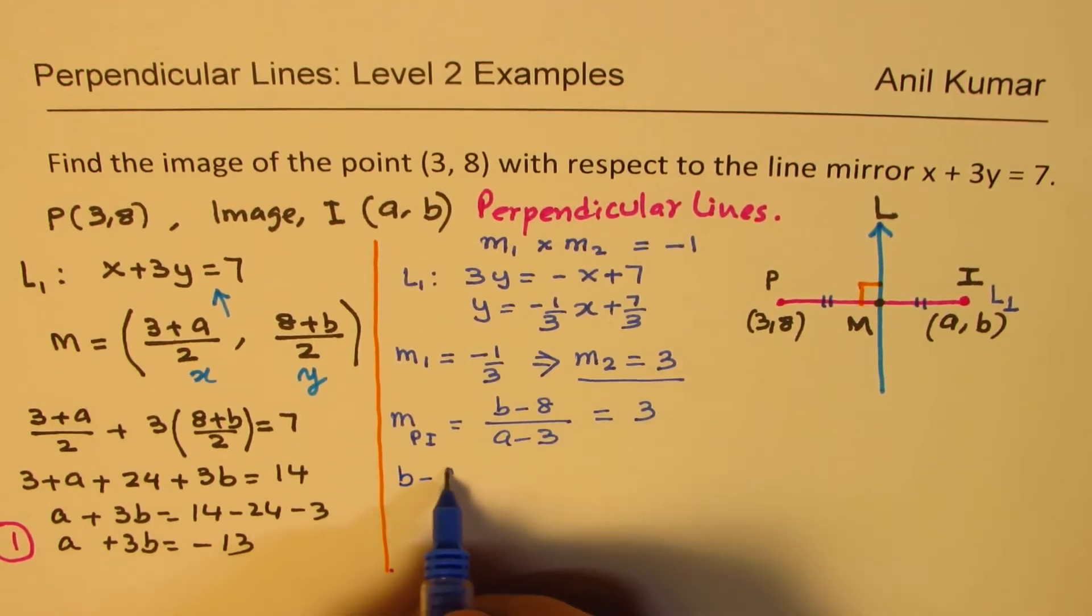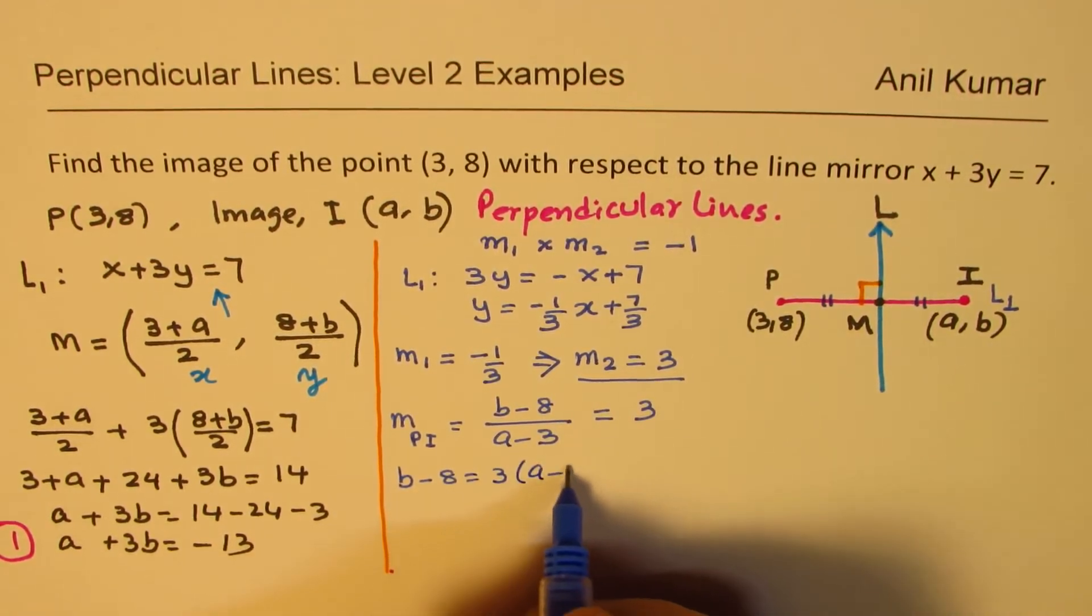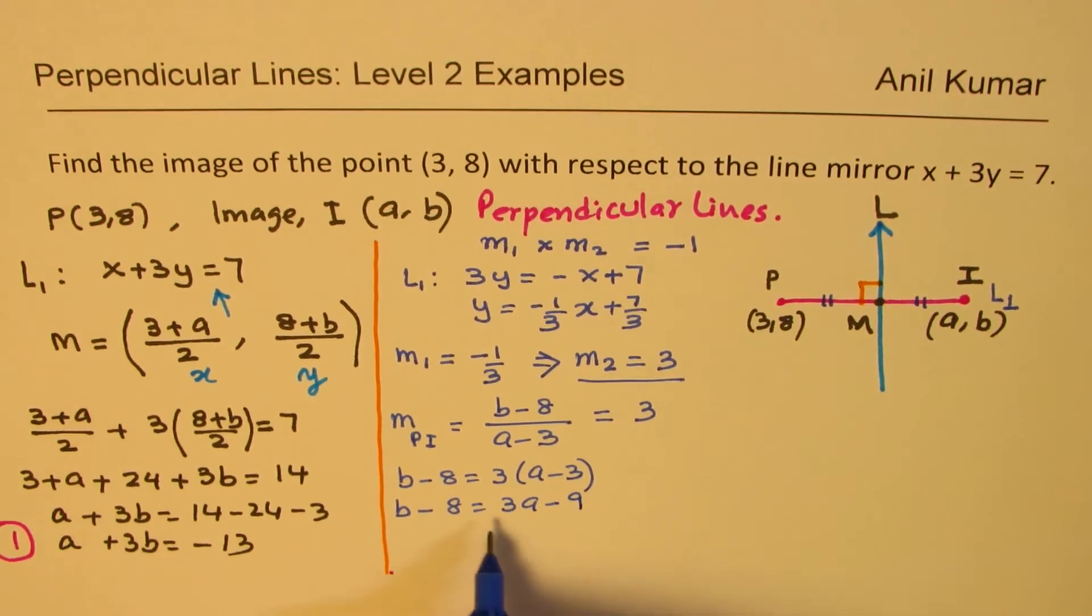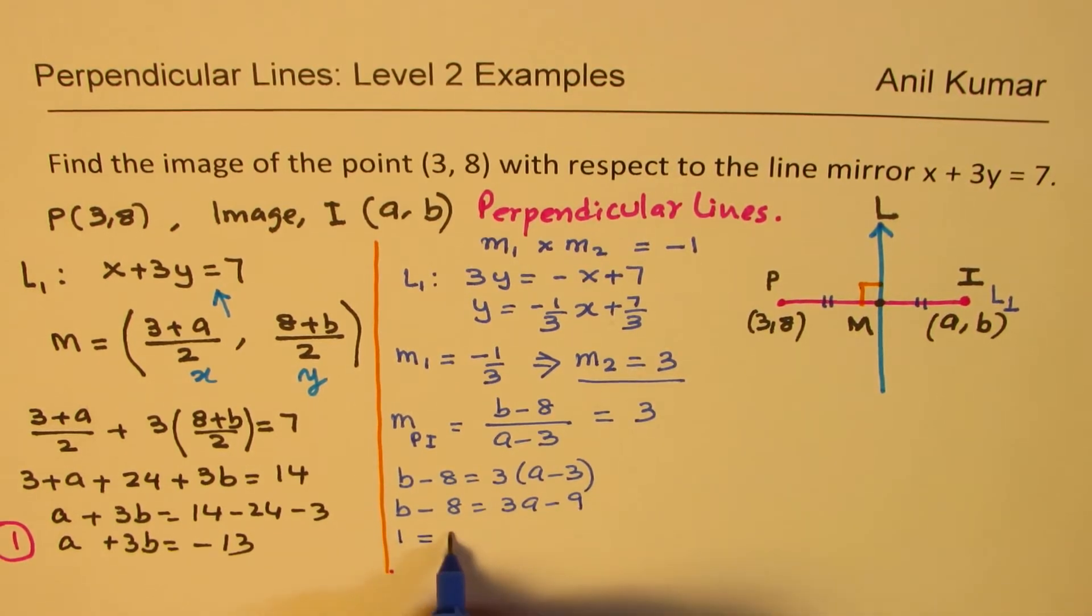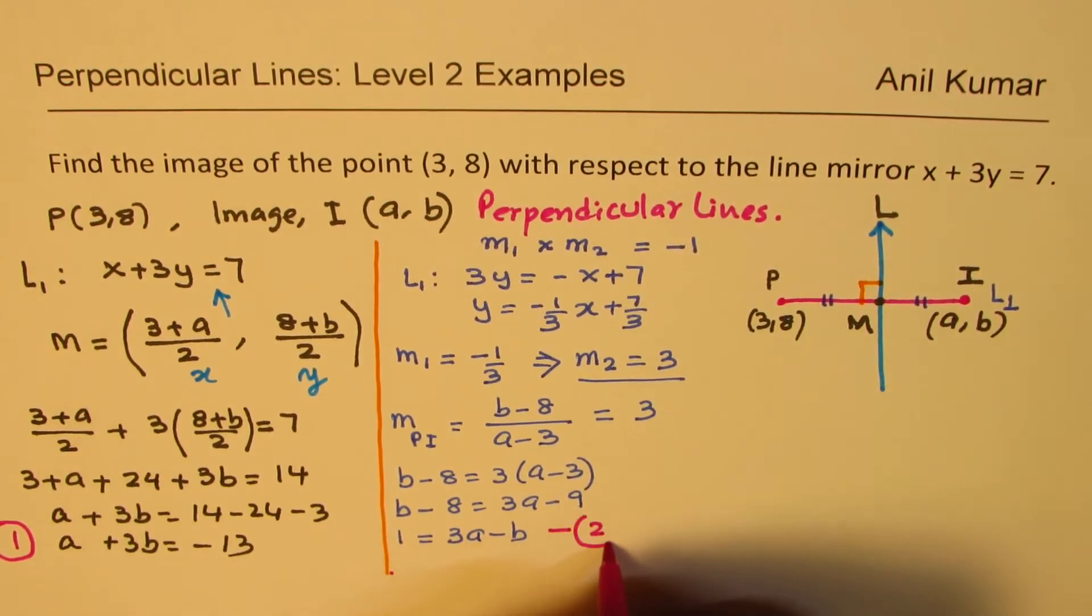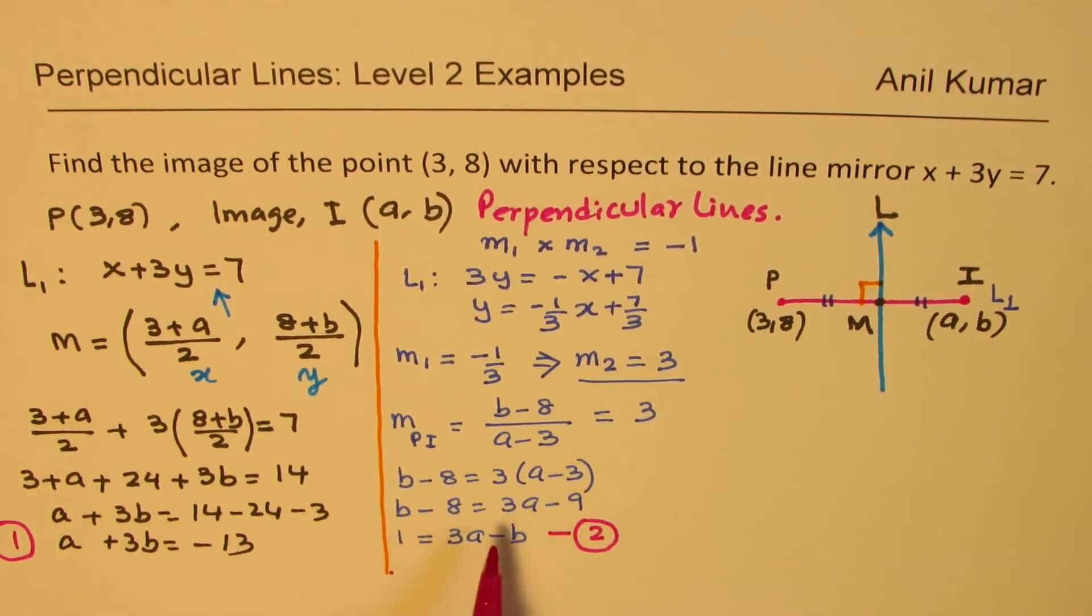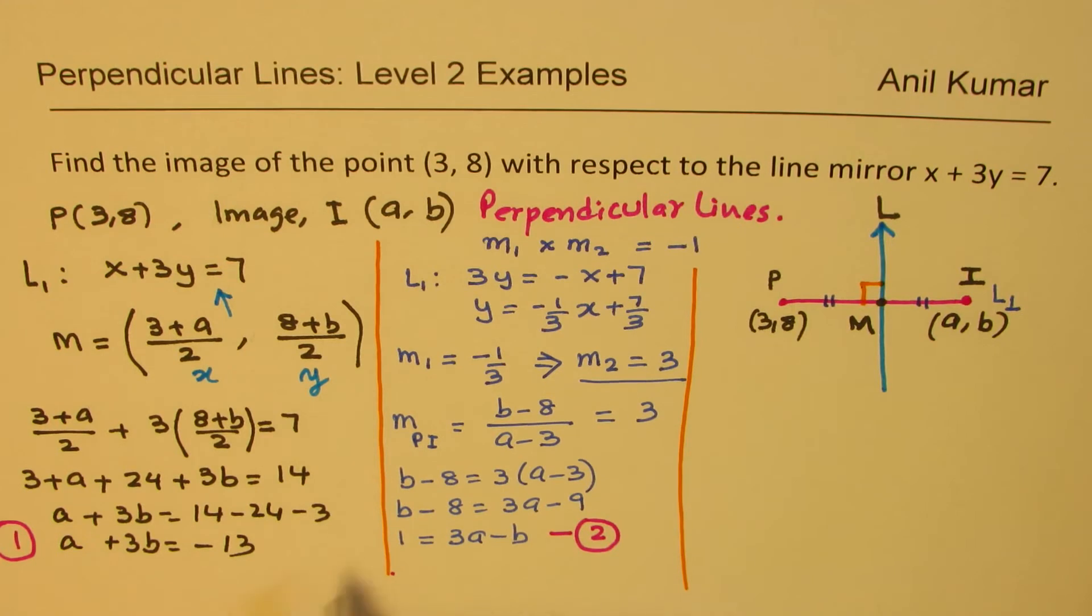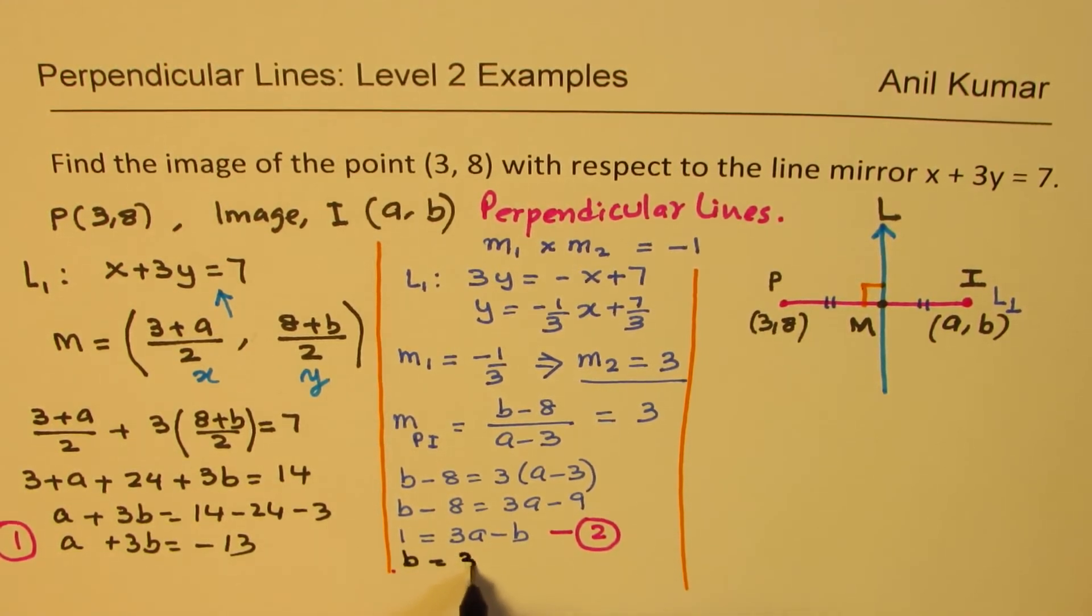So let's cross multiply. So we get b - 8 equals to 3 times (a - 3), or b - 8 equals to 3a - 9. So that gives you the equation as we can take b on this side, 9 on this side, so 1 equals to 3a - b. Let's call this as our equation number 2. I can actually write b equals to 3a - 1. So let me call this as my equation number 3.